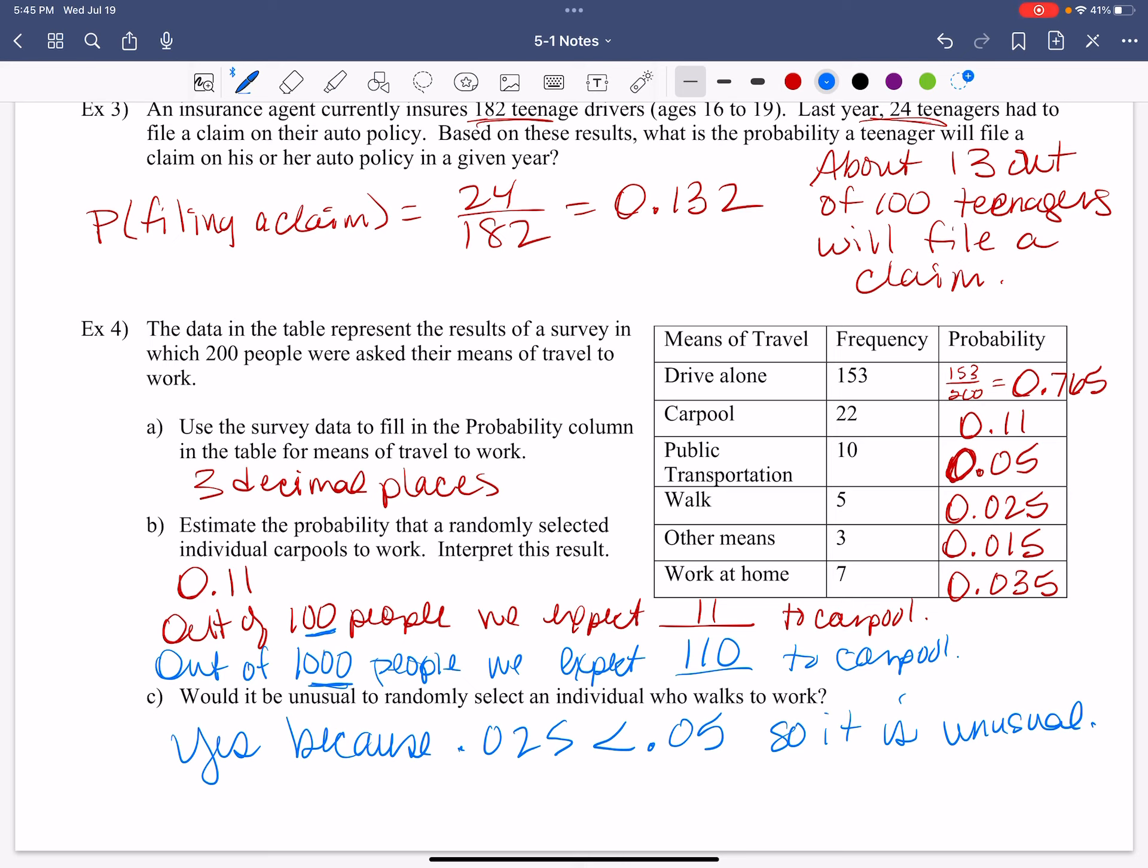All right. So honestly, if we were to say that, how many people out of 1,000? Out of 1,000? 25 out of 1,000 people walk to work. Yeah, that's not happening very often, right? That would be unusual. Nice.